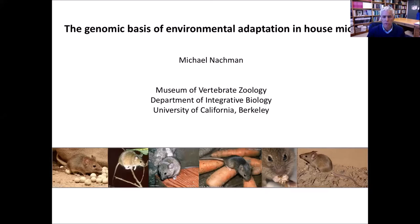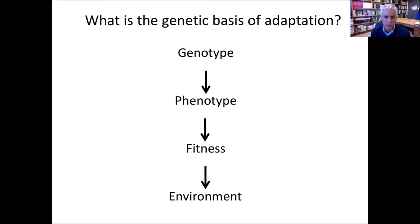As you'll see, it bears a lot of similarity to similar kinds of studies that have been done in Arabidopsis or in fruit flies. Some of the work that Christian Schlatterer has done is not unlike some of the work that we're doing in mice. The overarching goal is to try to link genotype to phenotype in the context of fitness in the environment, and of course for many of us, this is the big goal of evolutionary genetics in general.